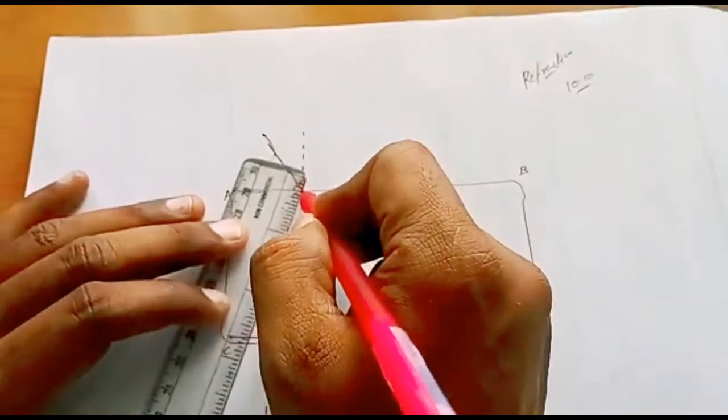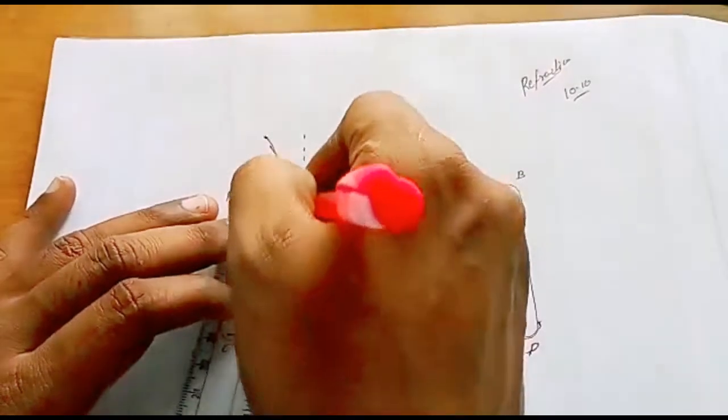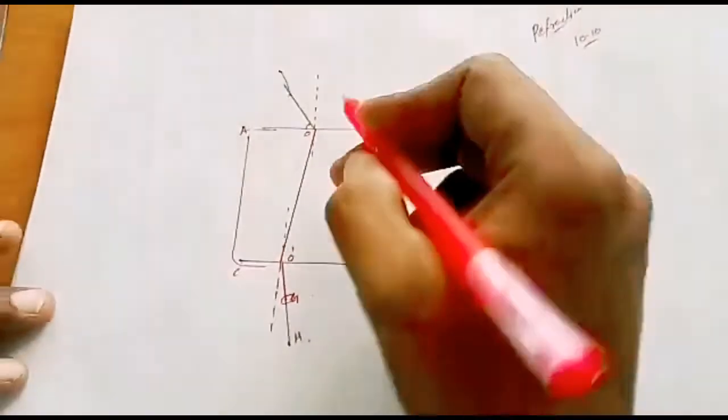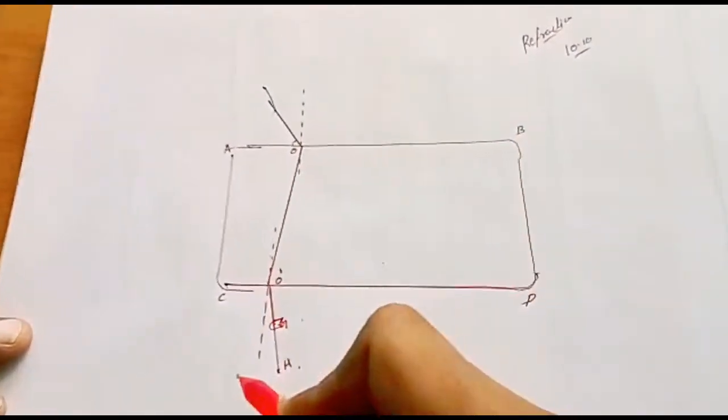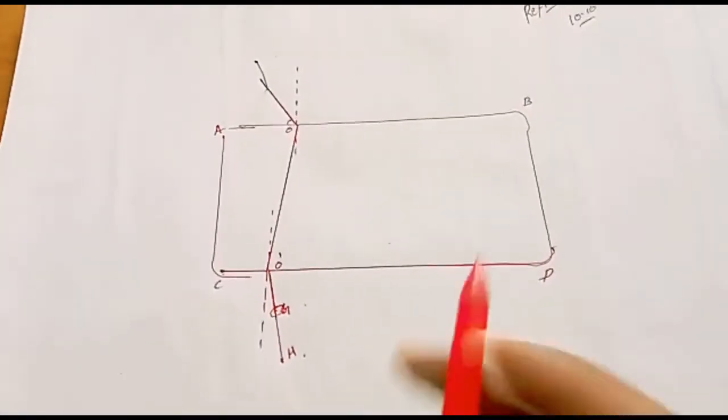Now I will join these two points. Now you can clearly see the line is bending. The light is refracting. So let's see how it is refracting.